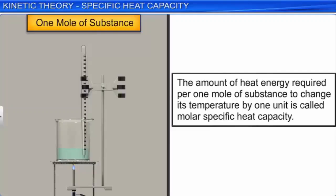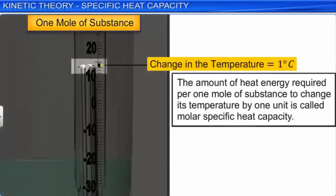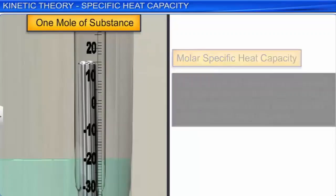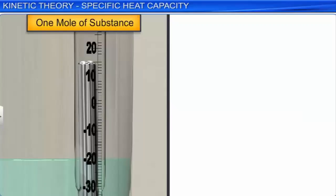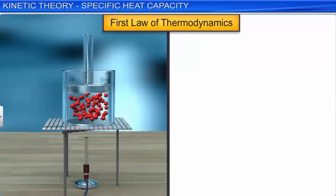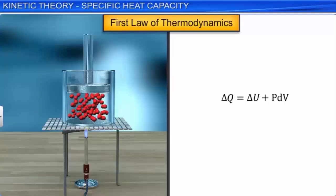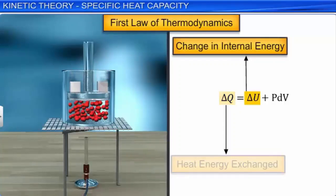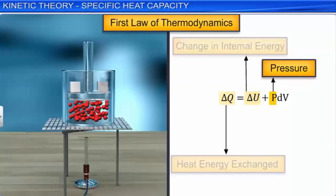The amount of heat energy required per 1 mole of substance to change its temperature by 1 unit is called molar specific heat capacity. That is, C = (1/N)·(dQ/dT), where N is the number of moles of the substance. According to the first law of thermodynamics, ΔQ = ΔU + PdV, where ΔQ is the heat energy exchanged, U is the change in internal energy, P is the pressure, and dV is the change in volume.